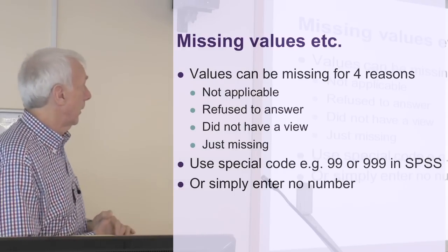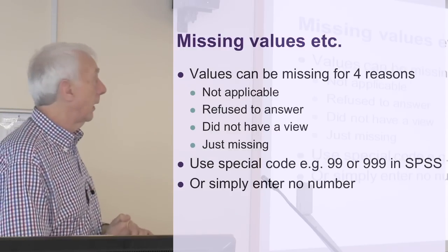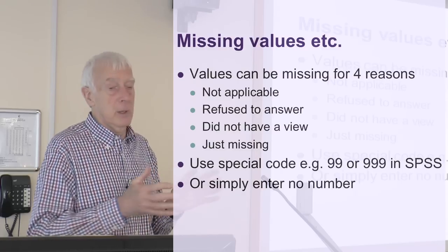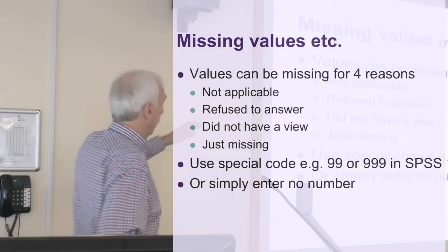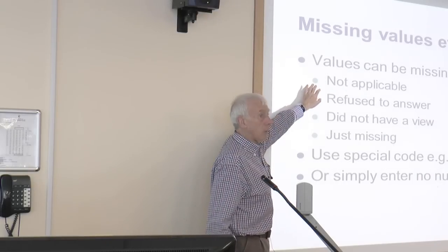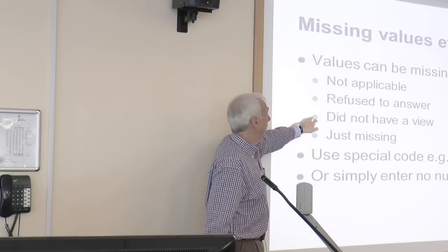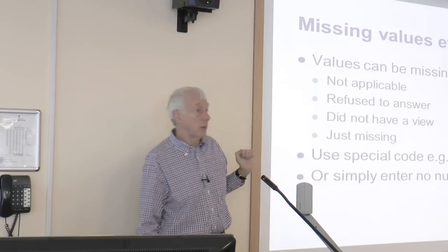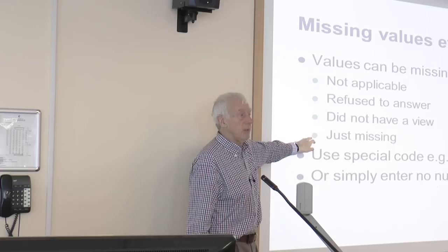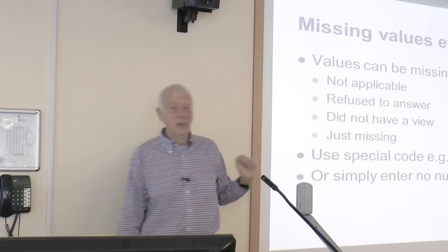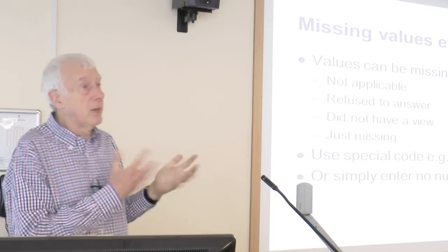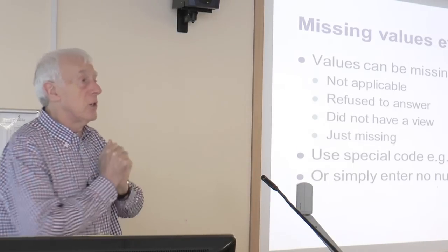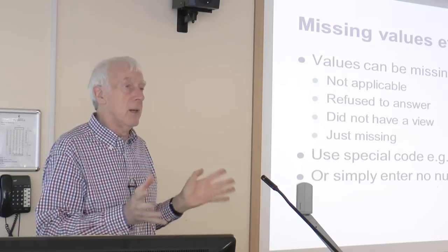I've already mentioned the idea of a special code for missing values — 99 or 999. That's one way of dealing with a missing value. If you know it's missing, you might even categorise the reasons: a code for not applicable, a code for didn't have a view, a code for refused to answer. It's hard to have a code for 'just missing' because you never know that's the reason. Most often it's just blank and we give it 99 for missing.